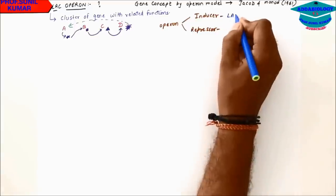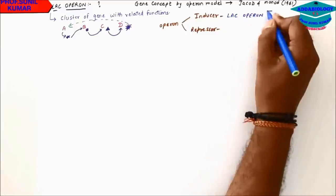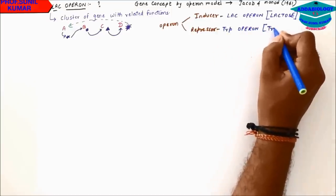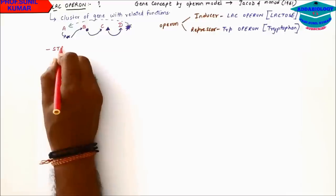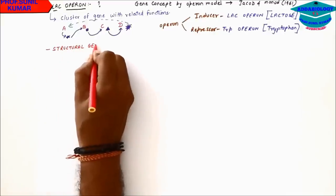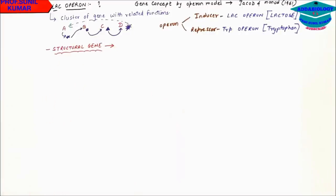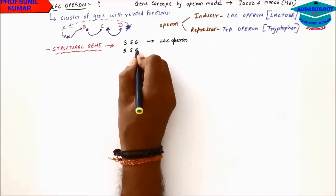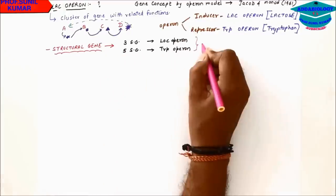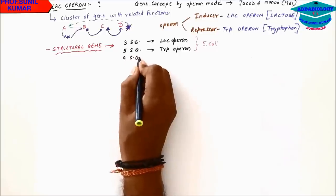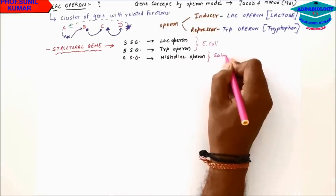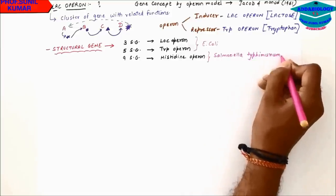There are two types of operons: one is inducer and the other is repressor. The inducer operon is the lac operon, for lactose. The repressor operon is the tryptophan operon. There are three structural genes in lac operon, five structural genes in tryptophan operon — both found in E. coli — and nine structural genes in the histidine operon, found in Salmonella typhimurium.